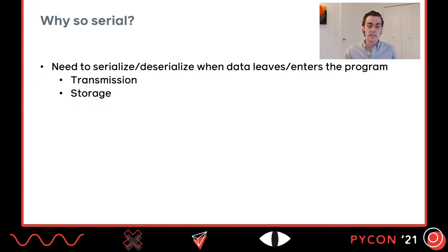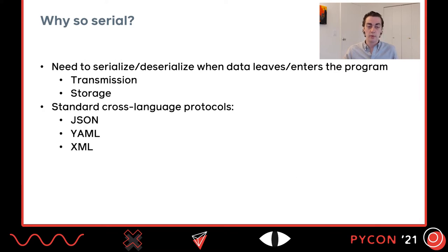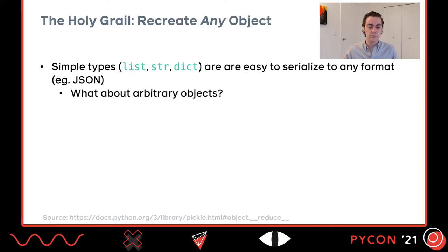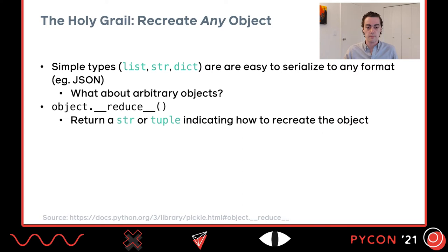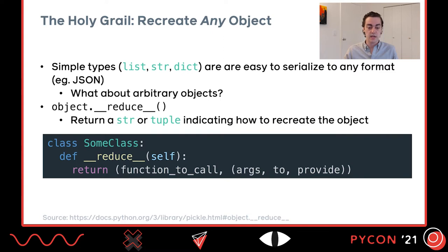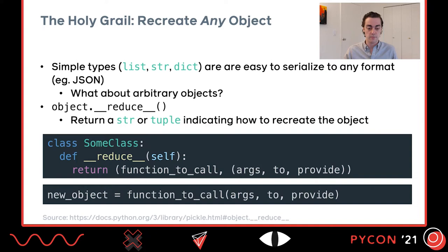Now let's talk about our first more unexpected RCE vector: deserialization. Serialization is needed whenever data is leaving the program — sending over the network or storing in a database. Standard APIs include JSON, XML, and YAML. Python-specific ones include pickle and marshal. Simple types like list, string, and dict are easy to serialize. But arbitrary objects are harder. Python offers the __reduce__ function, which returns a tuple indicating how to recreate the object — a function to call and arguments to provide. If you call that function with those arguments, you can recreate the object after transmitting it over the wire.